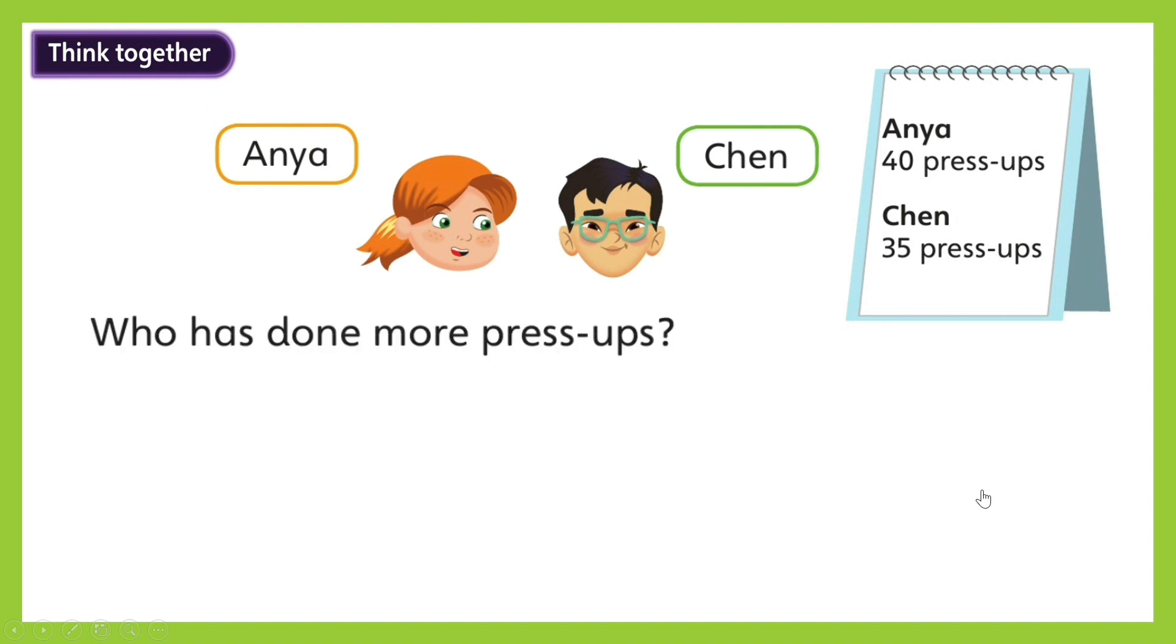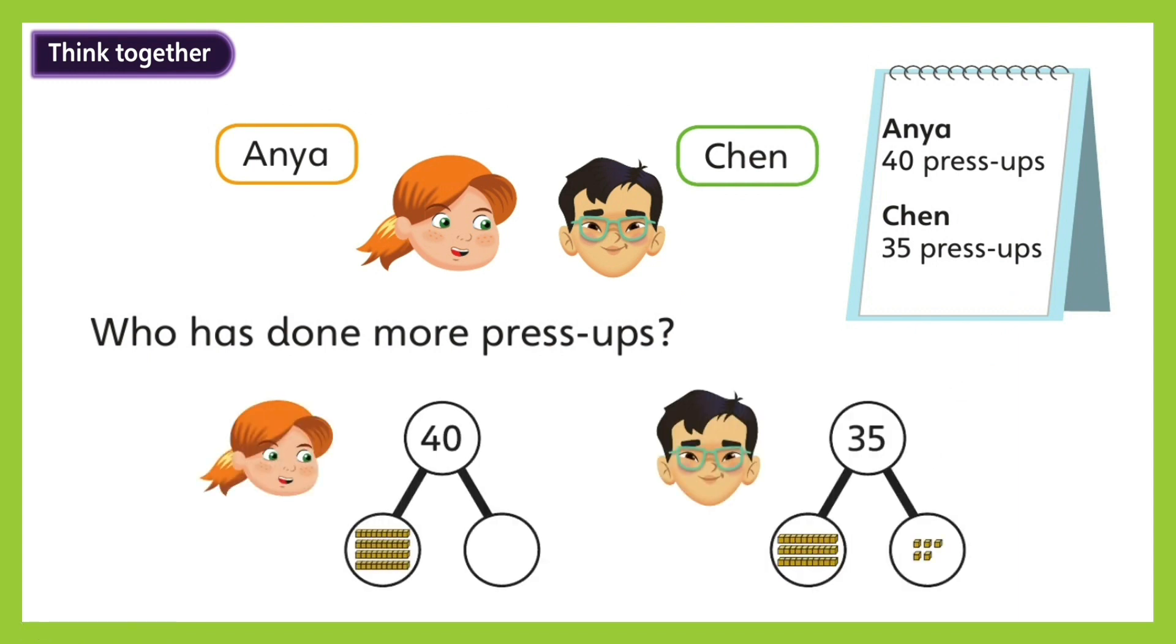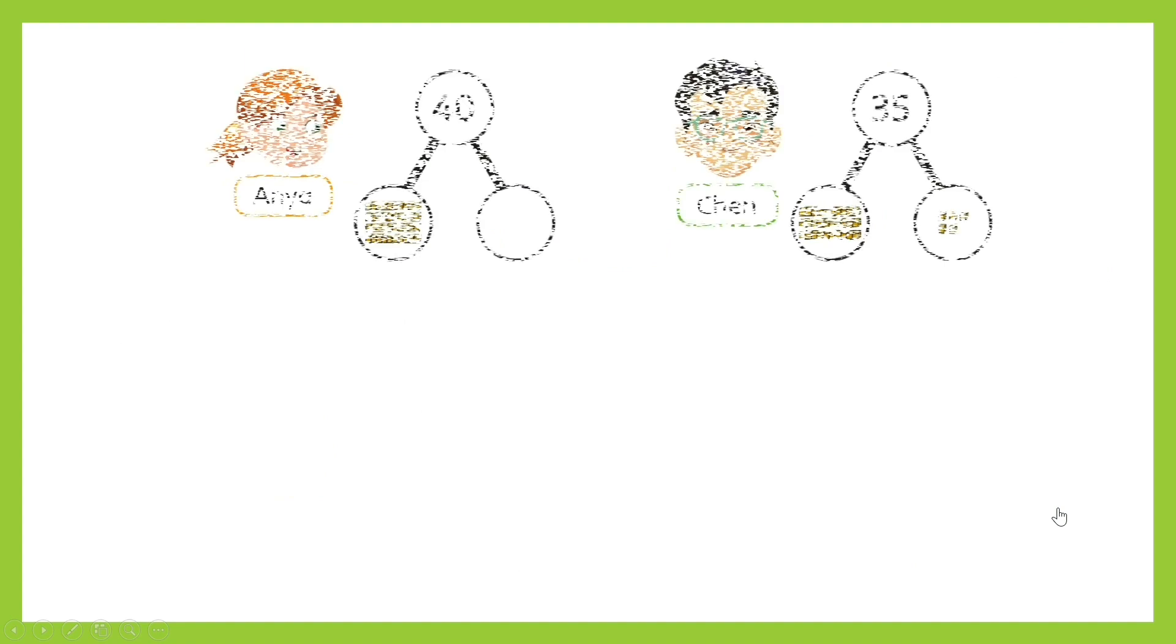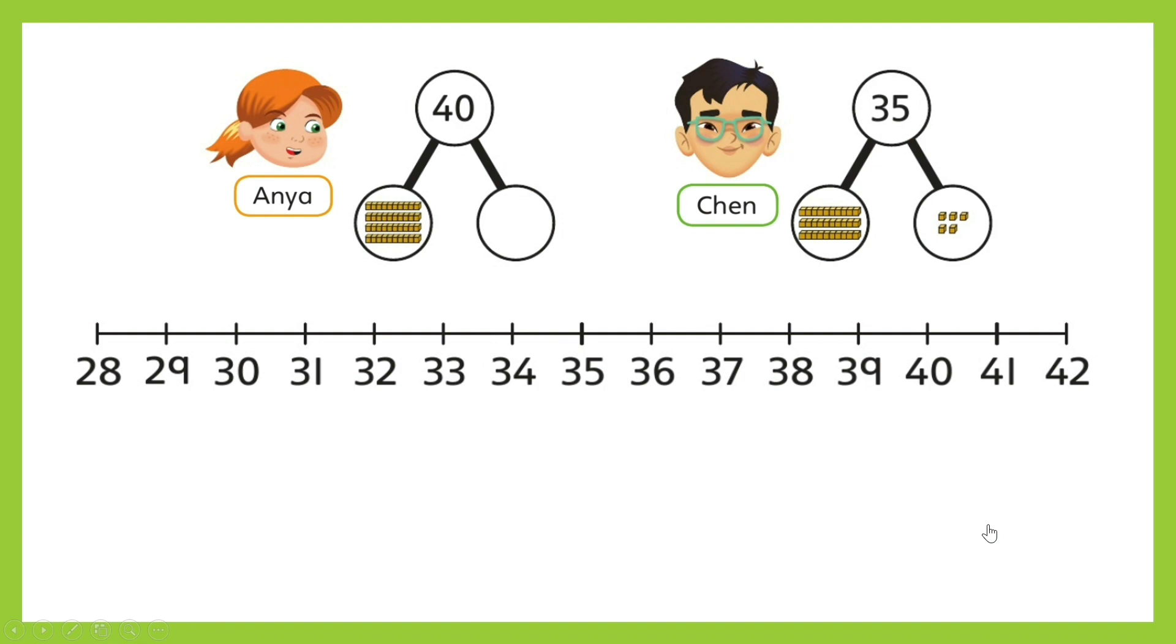Now, let's think and work together. Who has done more press-ups? Is it Anya or Chen? Look at this score sheet and these part-whole models. Does Anya's number or Chen's number have more tens? Great! Anya's number has more tens than Chen's number. Use this number line to help you more. Find Anya's number. There you go. How about Chen's number? There it is. Remember what you have just learned. Write a number sentence comparing Anya's number and Chen's number. Pause this video and do so.